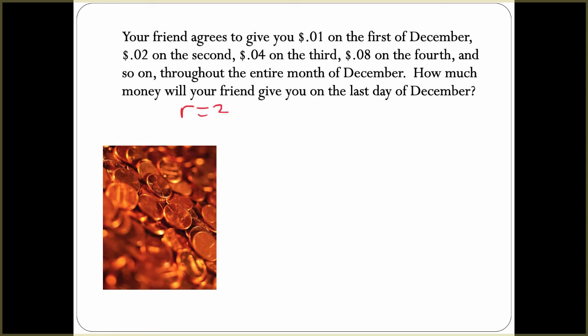We want to write the function for this, and we have a_n is our first term, which is 0.01, that penny. Our ratio, we're doubling, so it's 2, and we have n - 1 for the power.